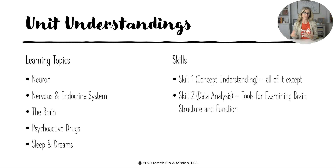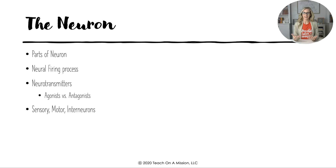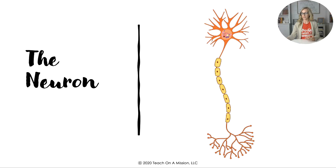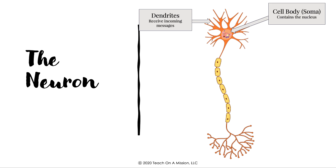The neuron is the basis of the entire nervous system, and you really want to know the basics of the biological unit — including parts, how the neuron functions and fires, the neurotransmitters, and the different types of neurons. If you have the study guide available below this video, you have a neuron diagram; if not, just draw one quickly. Make sure you go through and have each of the different parts.